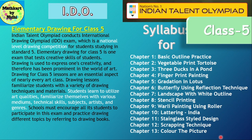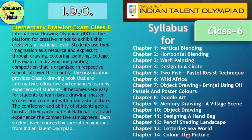For Class 5, Indian Talent Olympiad has chosen the Elementary Drawing Competition at national level. Students learn to utilize art qualities, familiarize themselves with various mediums, technical skills, subjects, artists, and generals. The syllabus for Class 5 is: basic outline practice, which table print or toys, three ducks in a pond, fingerprint painting, graduation in lotus, butterfly using reflection techniques, landscape with white dot line, stencil printing, worldly painting using roller, lettering India, stained glass styled design, scrapping technique, and color the picture.